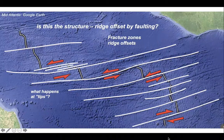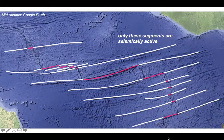Let's try and answer this problem by adding some more information. For the fracture zones, only these segments in pink are seismically active, suggesting this is the only area that is experiencing active fault slip.